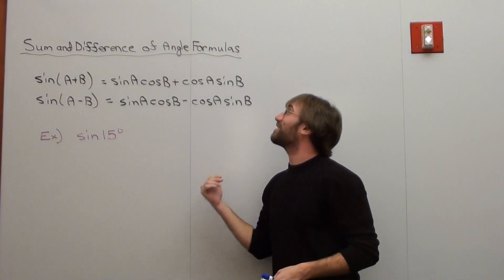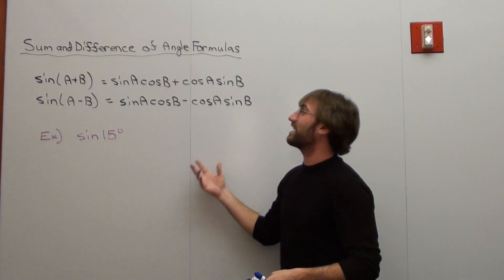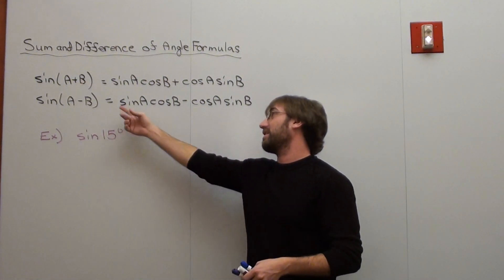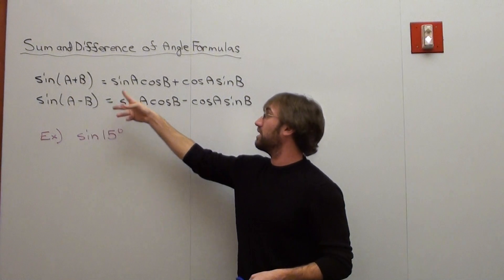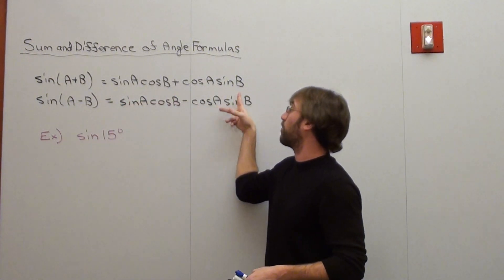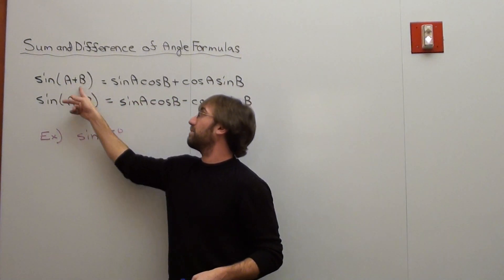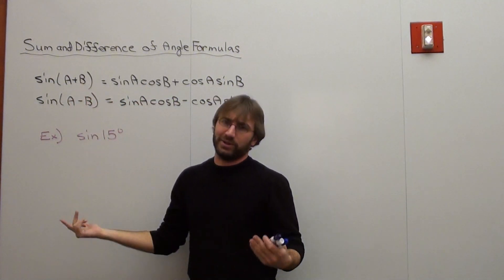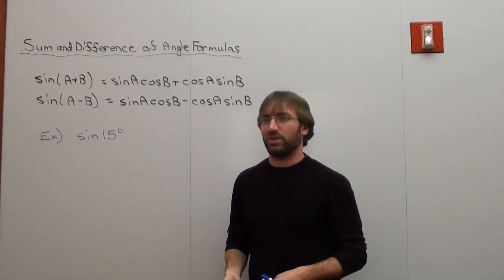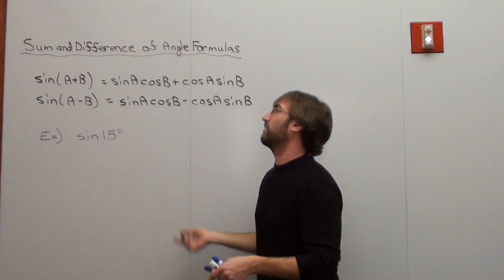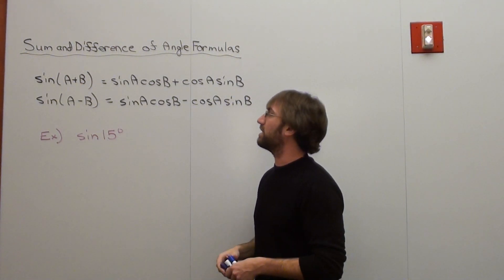Again, doing some difference of angle formulas, this time using the sine. I've got the sine of a plus b and the sine of a minus b, and these are their respective formulas. You can go ahead and read them. Basically, a and b stand for angles. You can use alpha and beta if you want to, or x and y, but a and b seem to be the easiest.